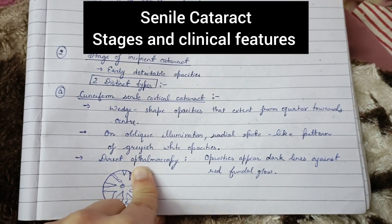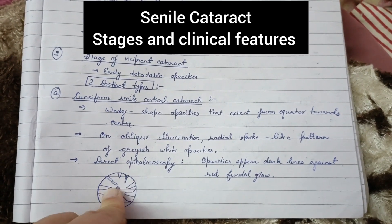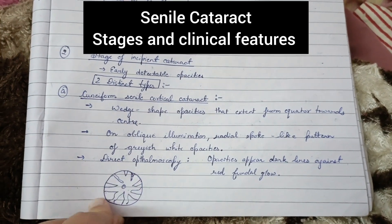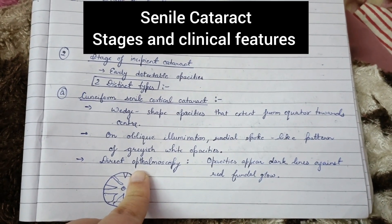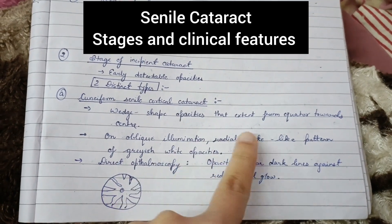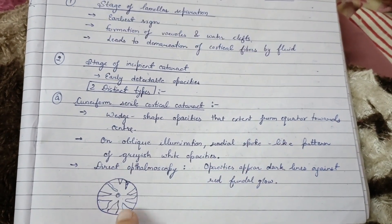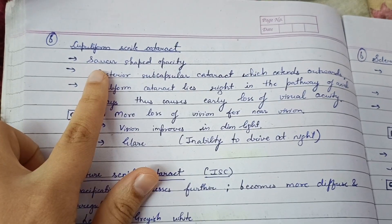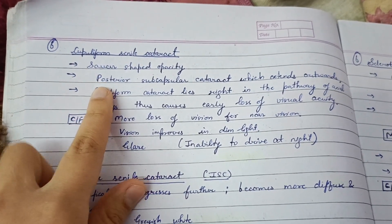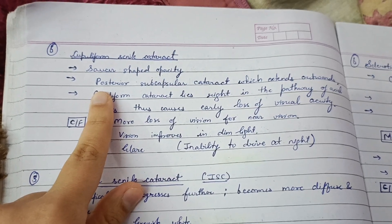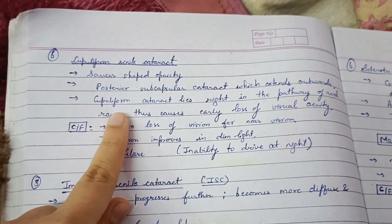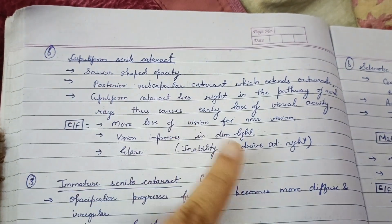In direct ophthalmoscopy, opacities appear as dark lines against the red fundal glow. This is the diagram of cuneiform senile cortical cataract in which wedge-shaped opacities extend from the equator to the center. In cupuliform senile cataract, a saucer-shaped opacity is seen. It is a posterior subcapsular cataract which extends outward. Cupuliform cataract lies right in the pathway of axial rays.